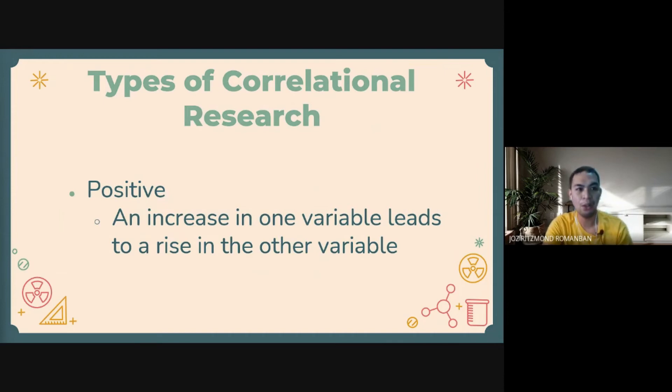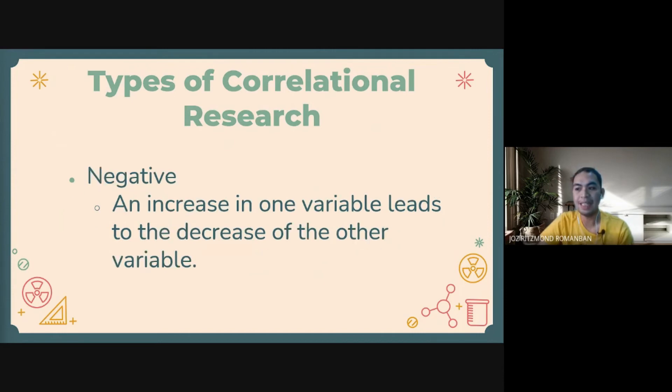That is an example of positive correlation. Next is negative correlational research or negative correlation, wherein if there is an increase in one variable, it leads to the decrease of the other variable and vice versa.